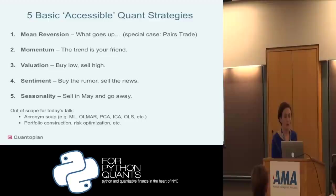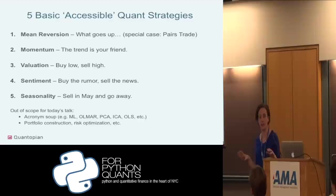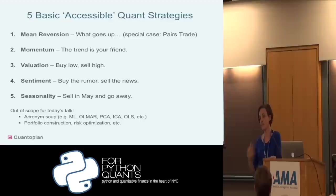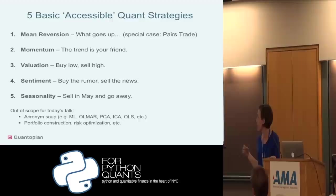I wanted to talk about five basic accessible quant strategies that I've seen implemented by community members on Quantopian. For some folks here this will be at a completely simplistic level, but I hope you'll see this is something that an everyday person who knows Python and has an Interactive Brokers account is doing on our platform. For each strategy, I'm going to give you an example with a link back to an algorithm so you can look at the code yourself.